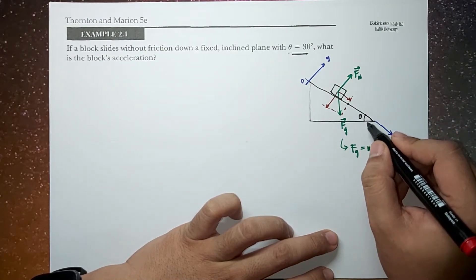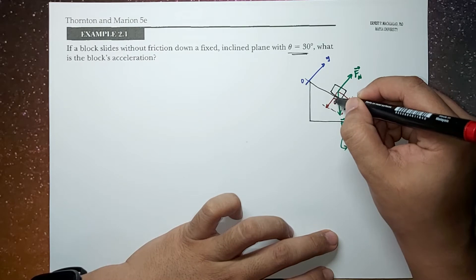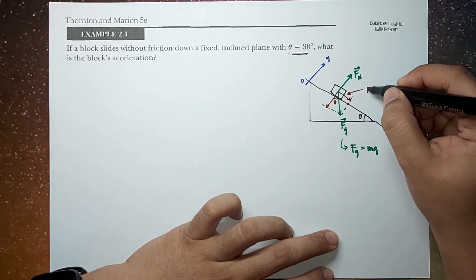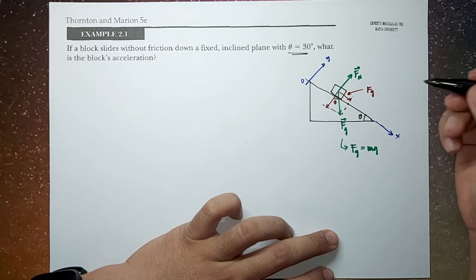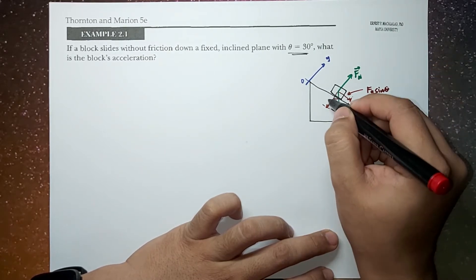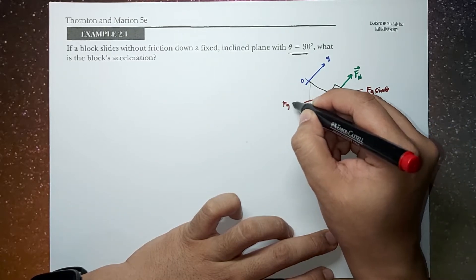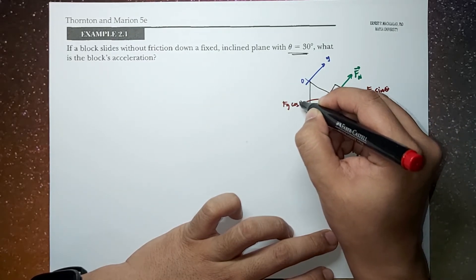So if this is theta by geometry, this will be theta as well. This component, therefore, would be Fg times sine theta. And then this component will be Fg cosine theta.